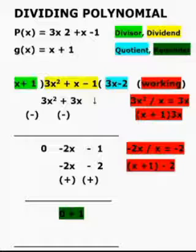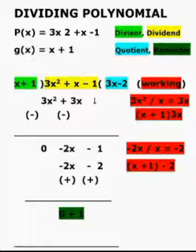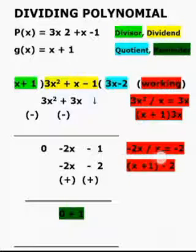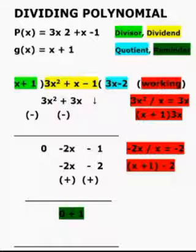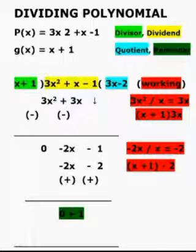The first term of the dividend is now minus 2x, and the first term of the divisor is x. Minus 2x divided by x is minus 2. Now multiply x + 1 into minus 2. You will get minus 2x and minus 2. Now let us subtract it by changing the symbols.